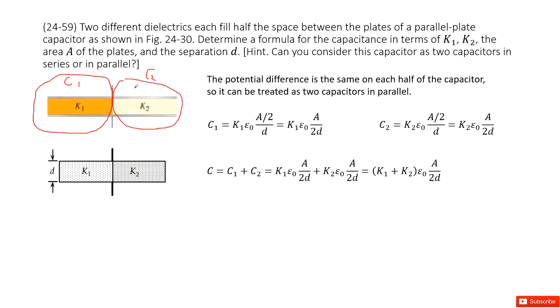And then if we want to find the equivalent capacitance for C1 and C2 in parallel connection, it's just C1 plus C2.